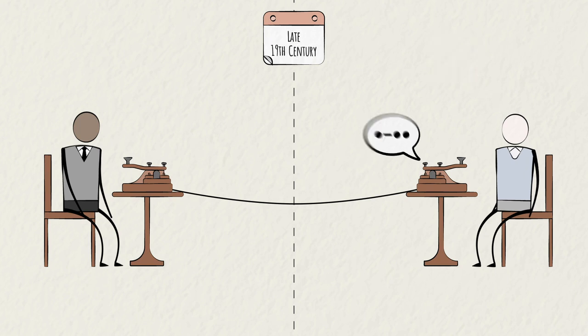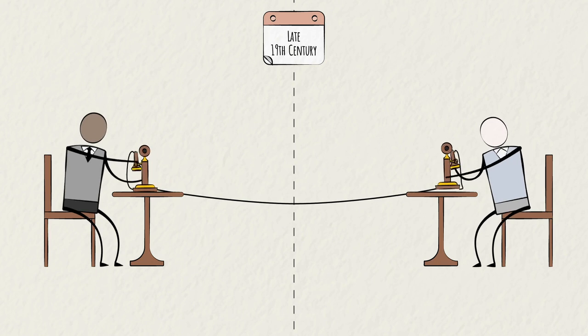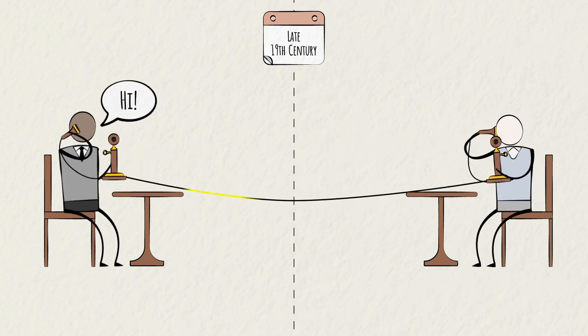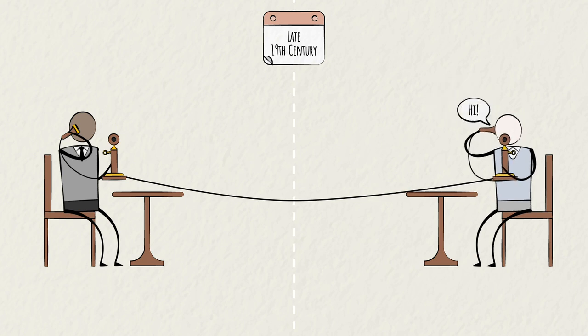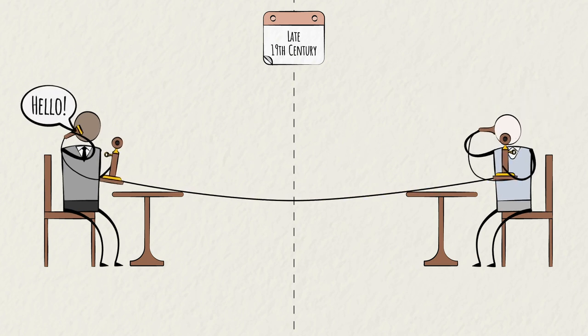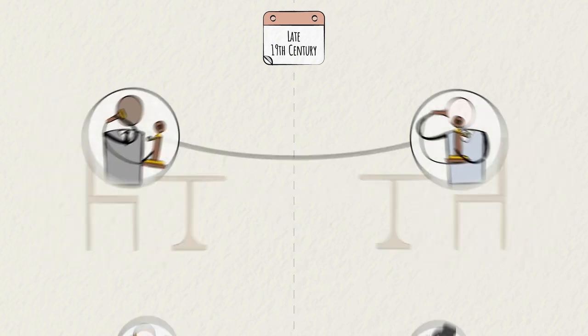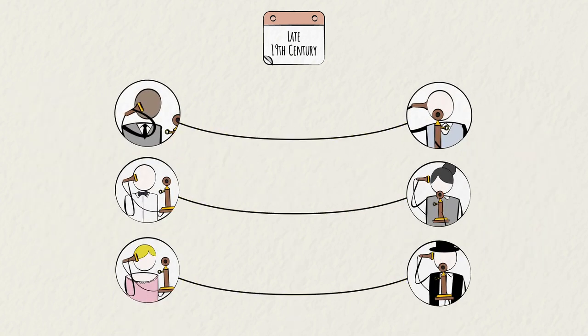By the end of the 19th century, the telegraph was replaced by the telephone. This allowed for sound waves produced by people's voices to be converted into variations of electrical current, which then traveled across wires to another telephone where they would be converted back into sound waves. This opened up instant communication to all of society.